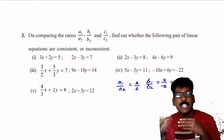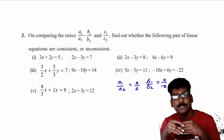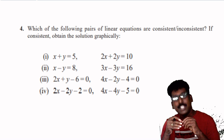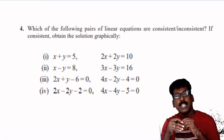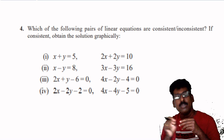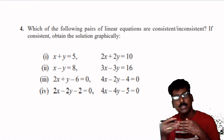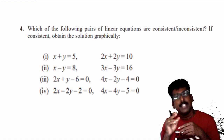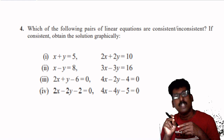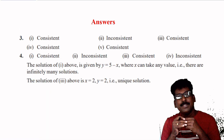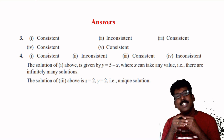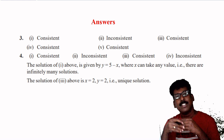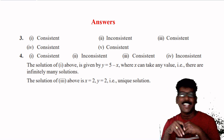Look at one more question: which of the following pairs of linear equations are consistent? If consistent, obtain the solution. First check a1 by a2, b1 by b2, and c1 by c2, and if it is consistent draw the graph. If the graph shows intersecting lines, that intersecting point is the solution. The answers are provided — do verify them. That is all for today's class. We will discuss questions 5, 6, and 7 in the next class. Till then, bye, take care.